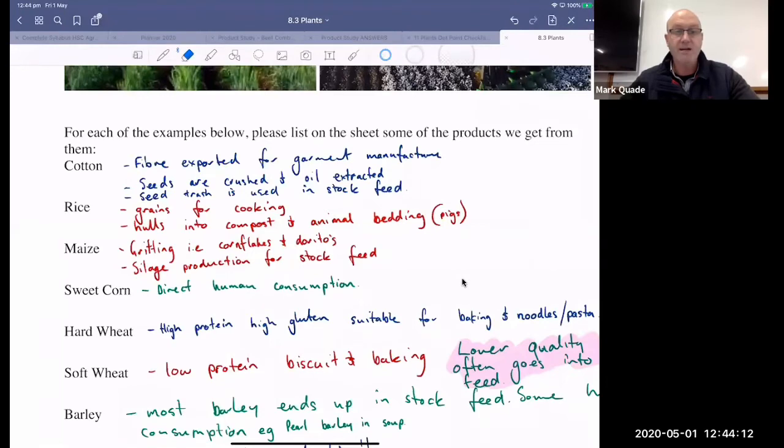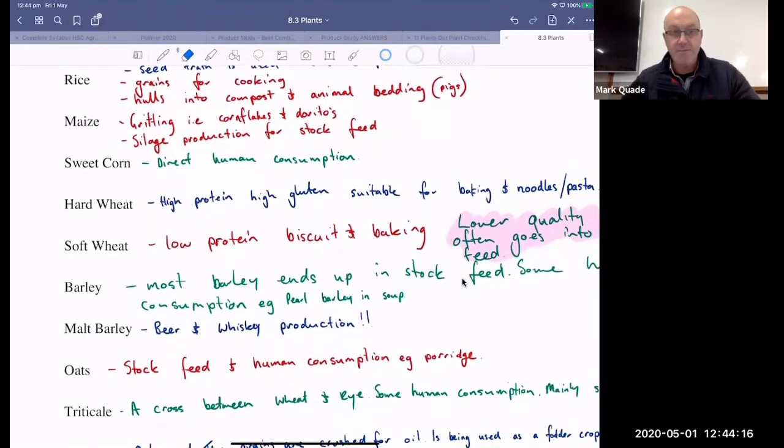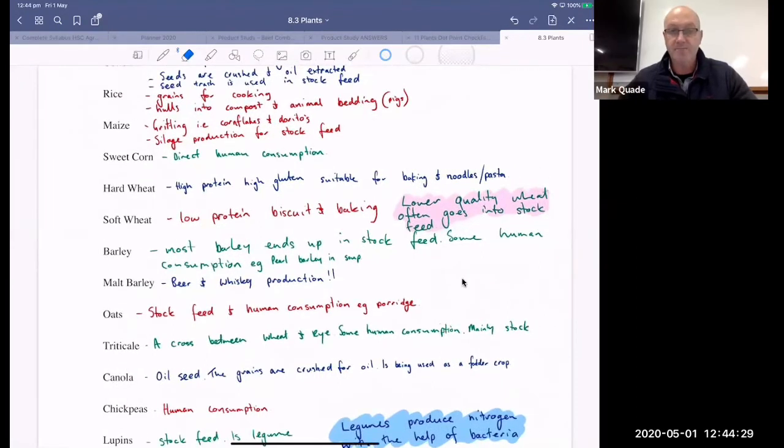So hard wheat. So we have hard wheat and soft wheat. Most of the hard wheat goes into baking noodles, pasta. Soft wheat is biscuit cakes. A lot of the lower quality wheats go into stock feeds. So anything below like 11% protein tends to end up into stock feed.